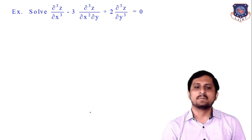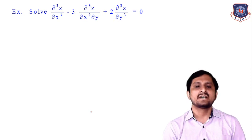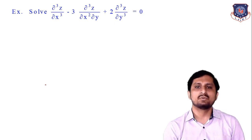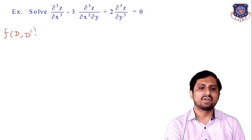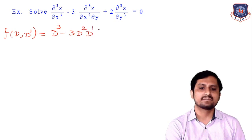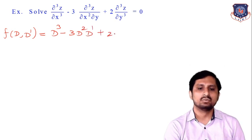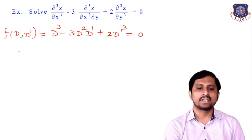So this is our next example. Solve: ∂³z/∂x³ − 3·∂³z/∂x²∂y + 2·∂³z/∂y³ = 0. This example is quite different, so try to understand very carefully. First of all, what is our equation f(D, D')? The equation f(D, D') is equal to D³ − 3D²D' + 2D'³ = 0.